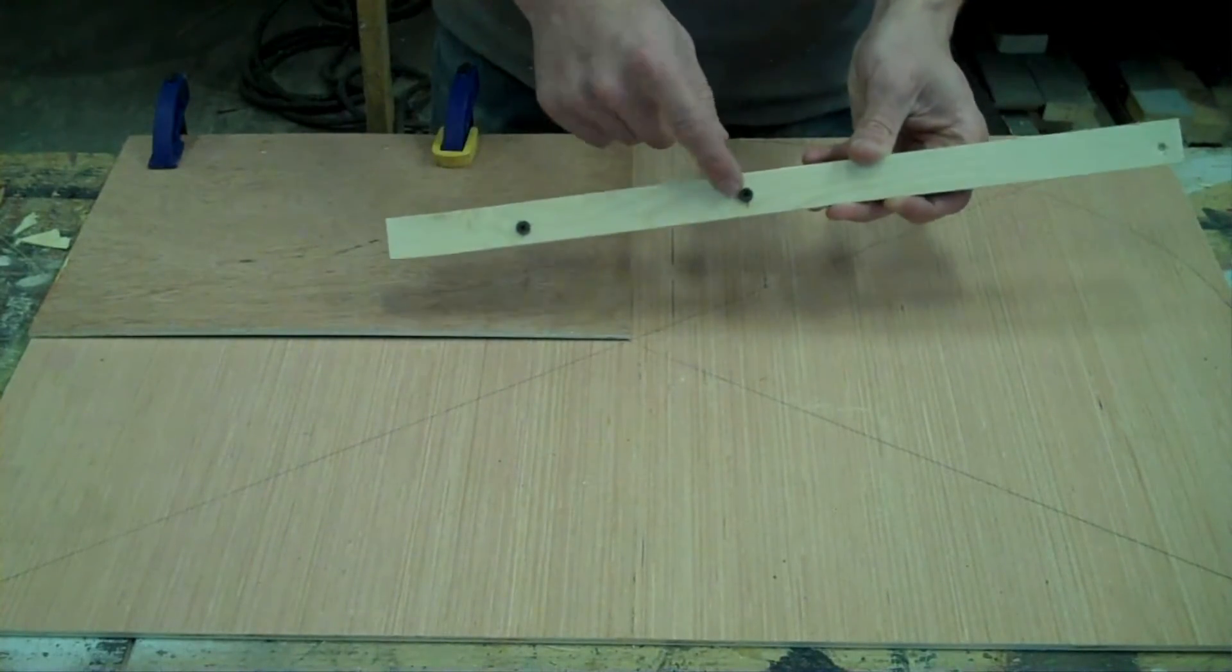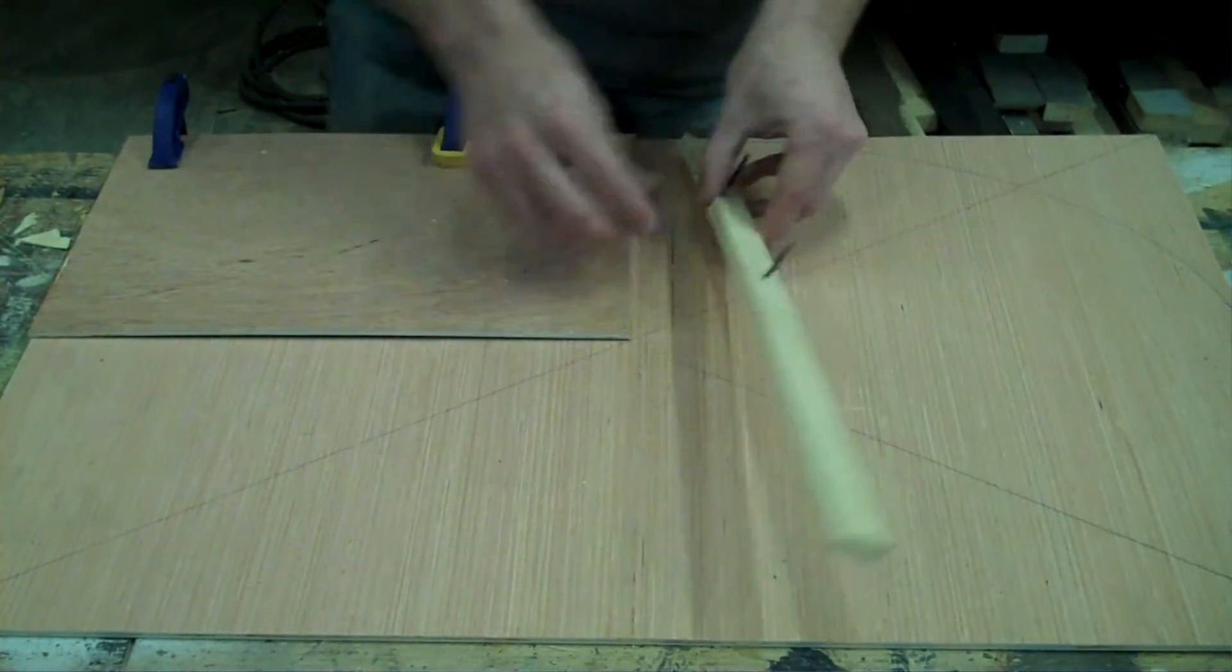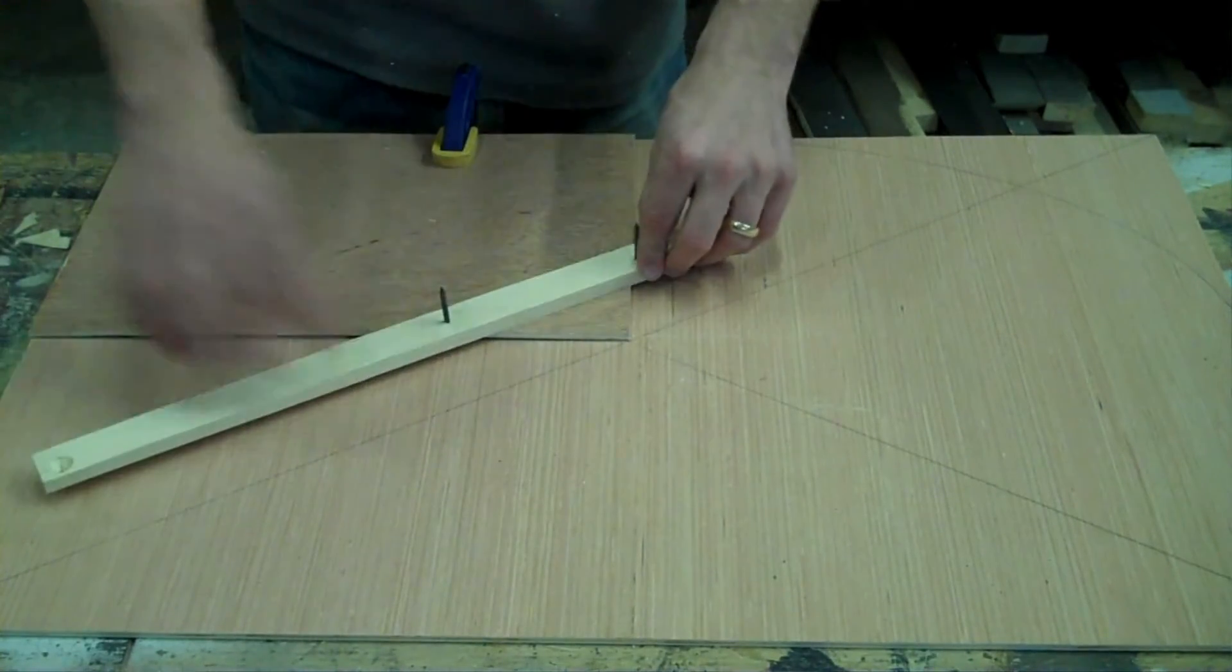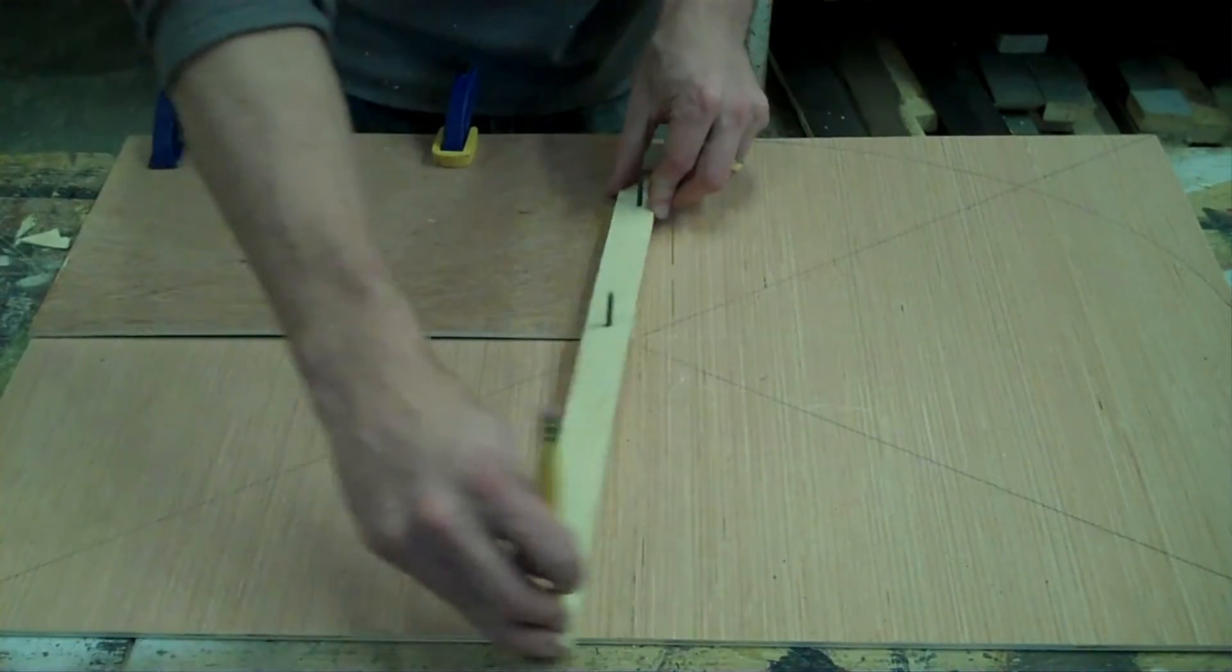For this guide, I have the screw head sticking out, which will ride along the edge of this piece of Luan. And this is a hole for the pencil to ride in.